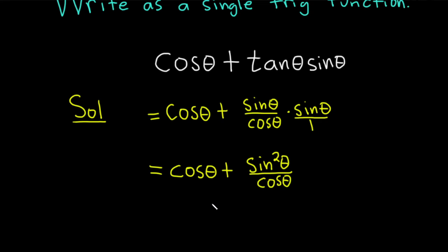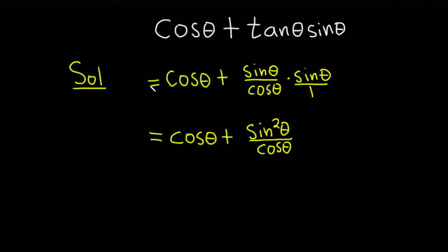And it might not be clear what to do next, but we don't really have much of a choice. The only thing we can do here is just add these. So in order to add these, we need a common denominator, and this is really over one.